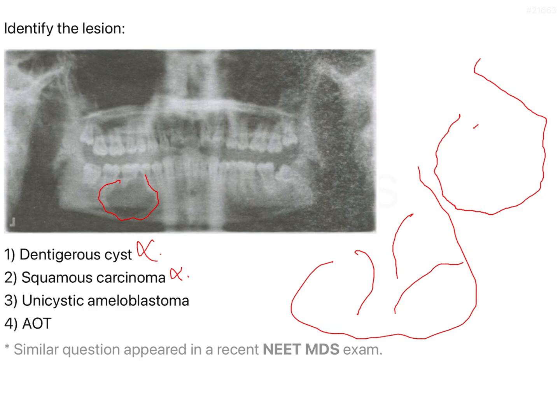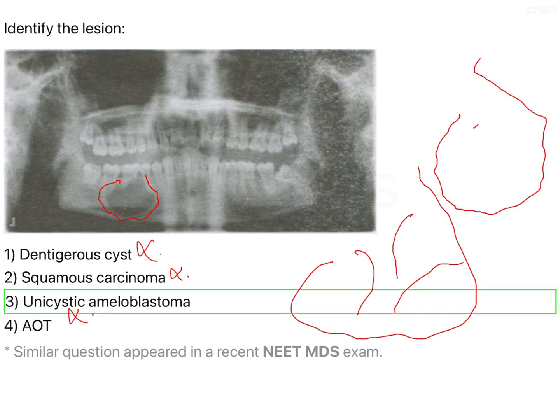Why is AOT not the answer? Because adenomatoid odontogenic tumour is commonly found in patients with swelling in the maxillary anterior region — that is the classical feature of AOT. Very rarely will it be present in the mandibular posterior region compared to all other odontogenic tumours. That is why it cannot be AOT, and that is how you eliminate AOT, thereby leading to the right answer being unicystic ameloblastoma.